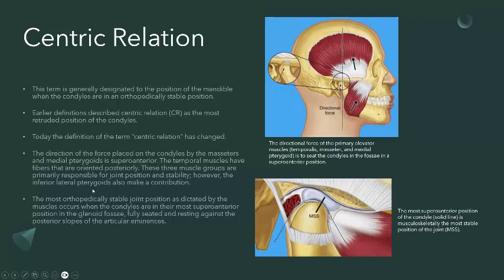The lateral pterygoids are the depressor muscles and help in the opening of the jaw. The lateral pterygoid has two heads — the inferior and the superior heads. The inferior lateral pterygoid also makes a contribution in attaining this stable position. The most orthopedically stable joint position as dictated by the muscles occurs when the condyles are in their most supero-anterior position in the glenoid fossae, fully seated and resting against the posterior slopes of the articular eminence.